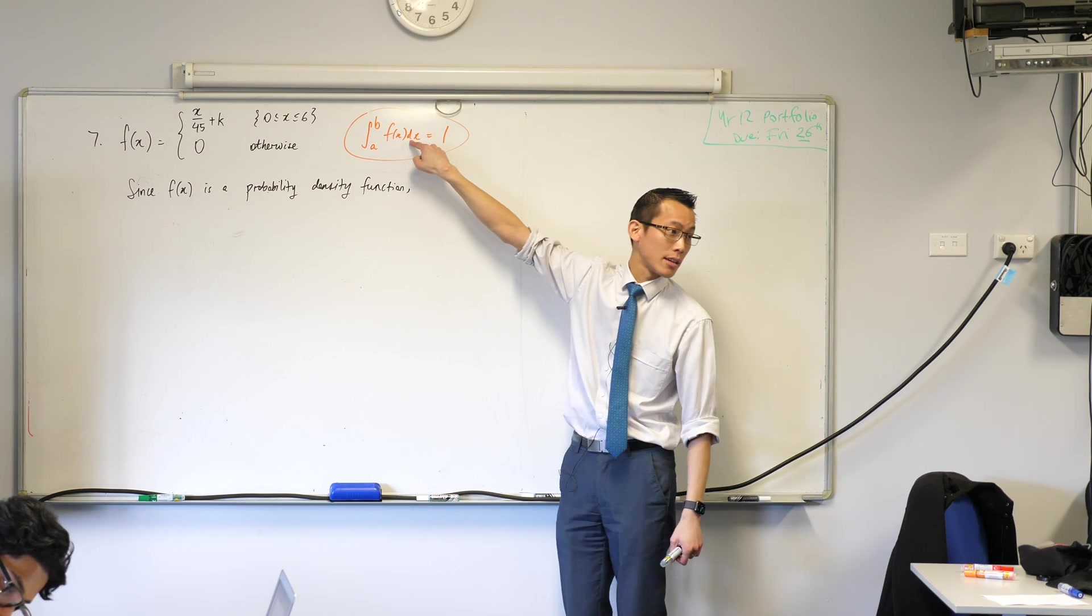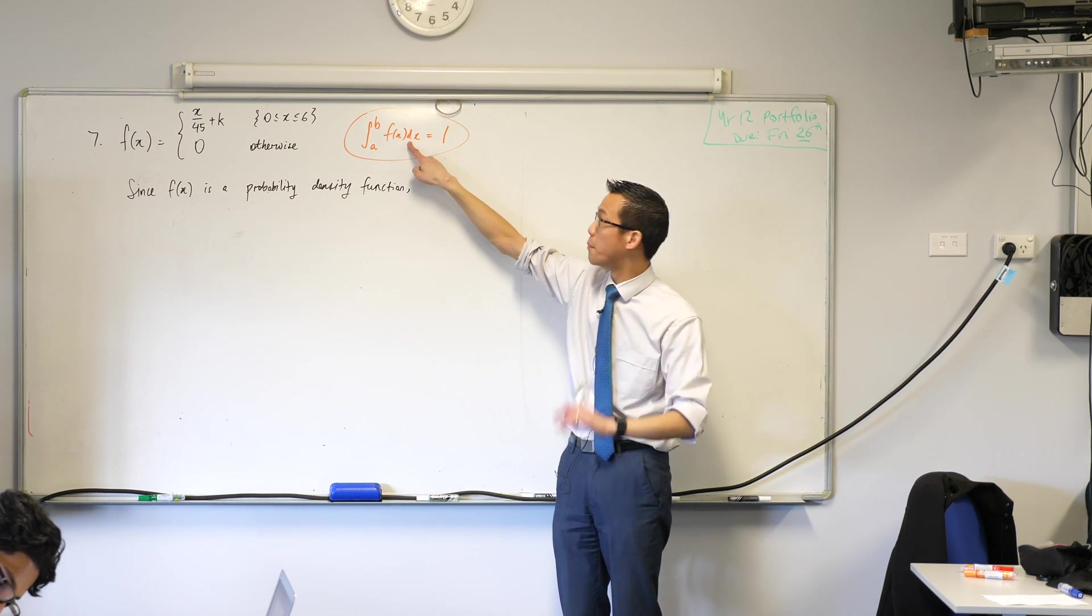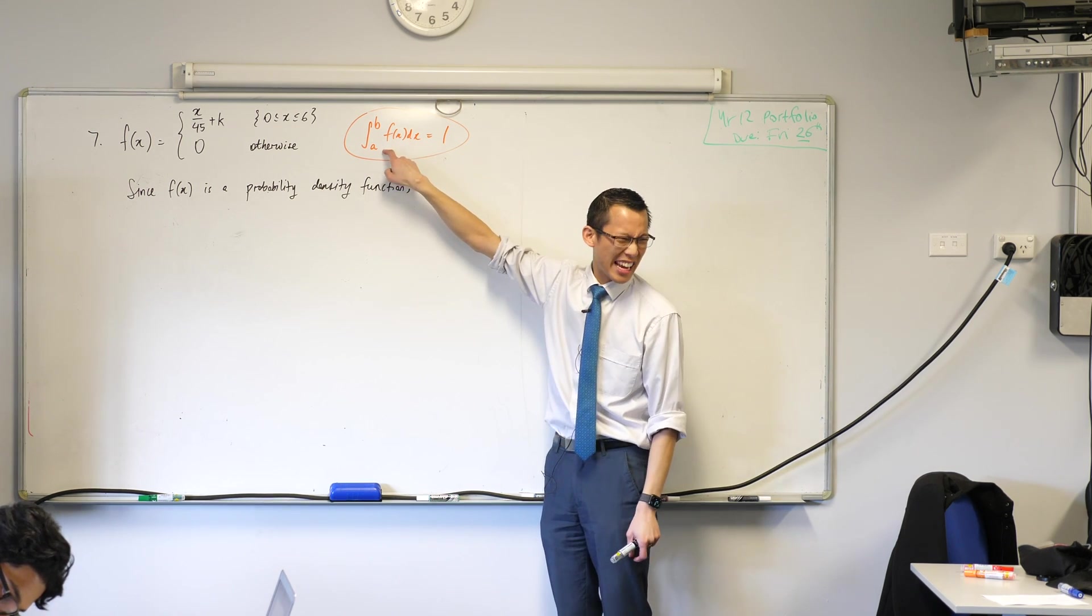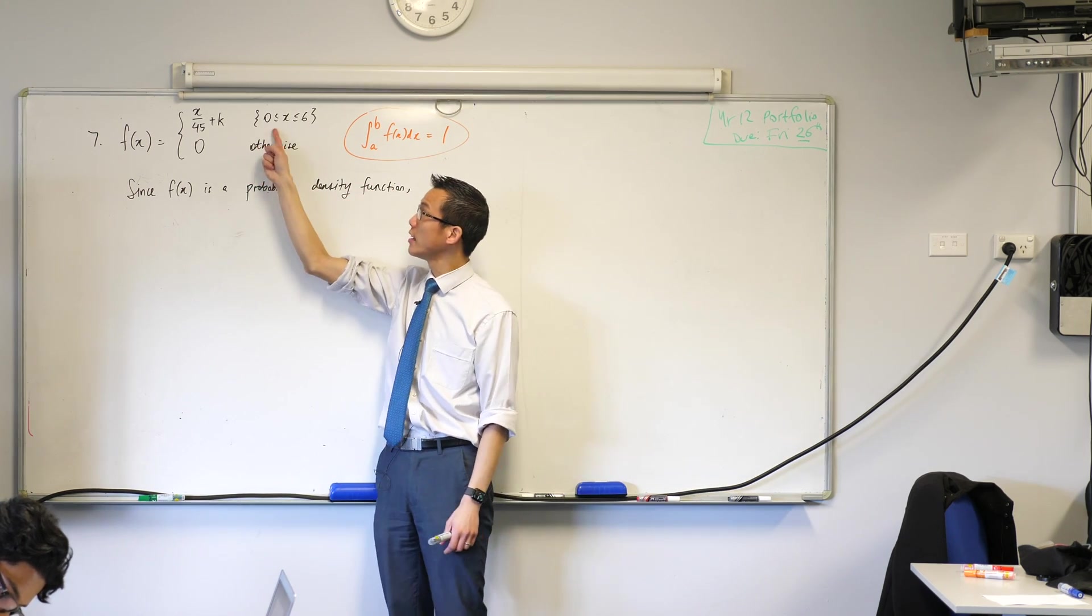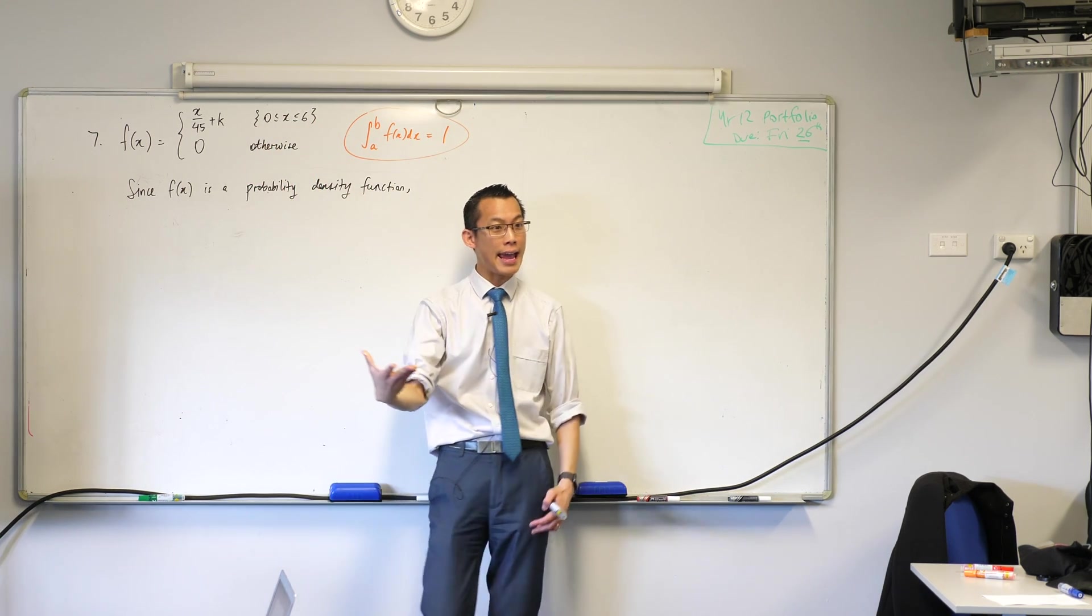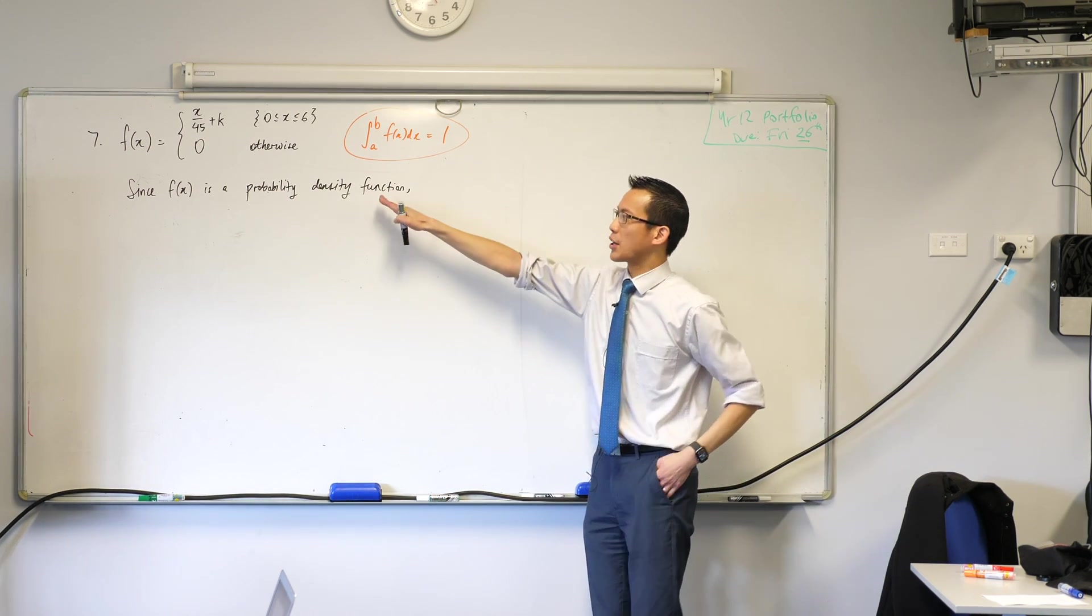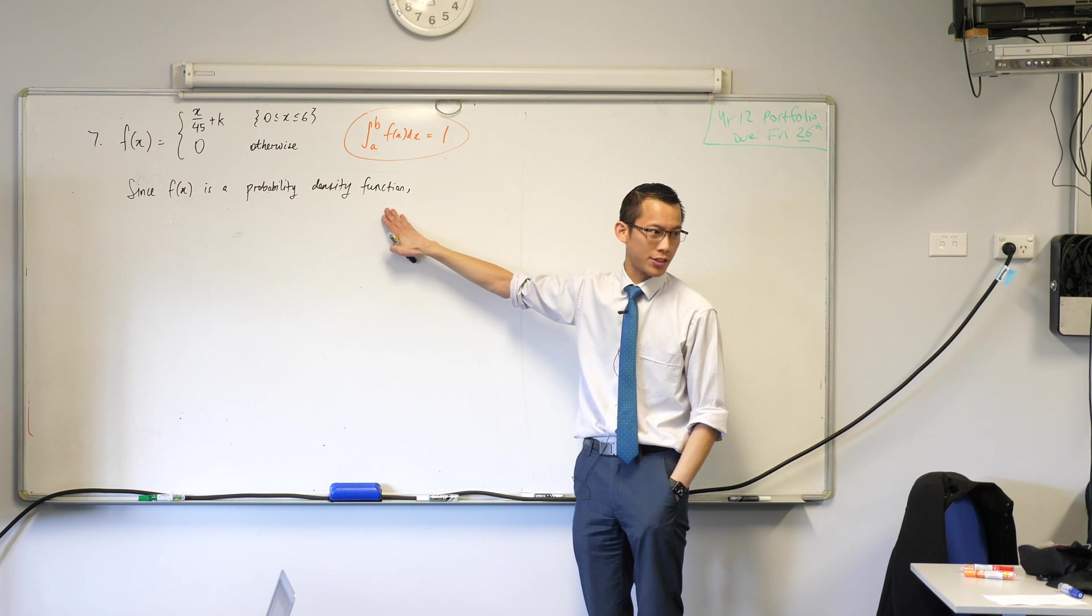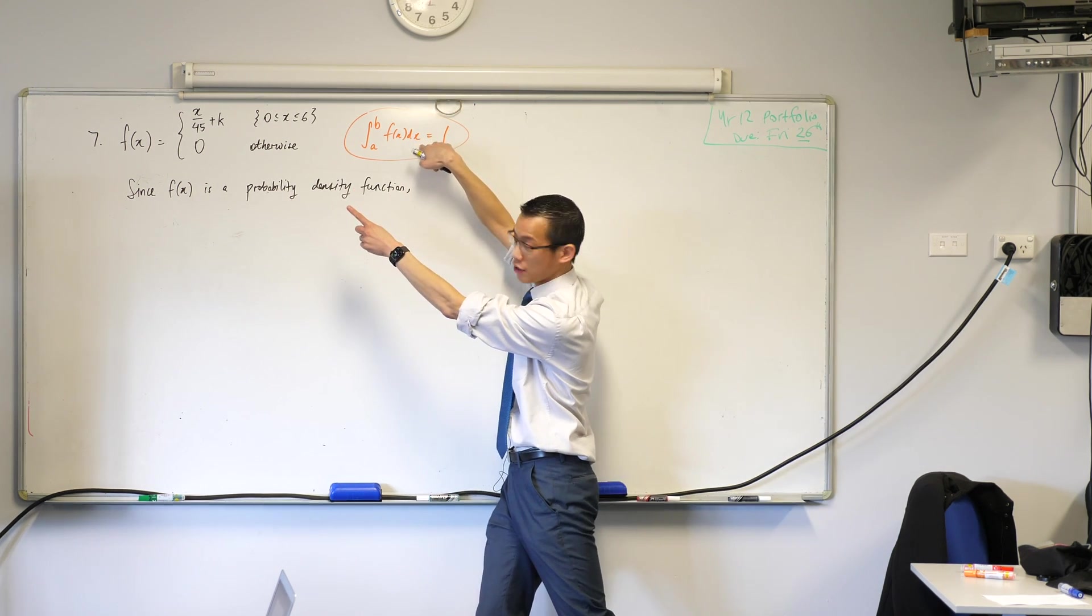Namely, this is that second condition that we know all probability density functions must obey. I've substituted instead of negative infinity and infinity here - I've put in a and b because practically you will usually get an a and a b. It's defined in this domain.